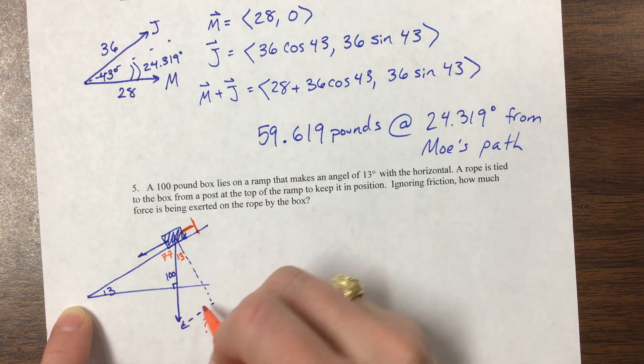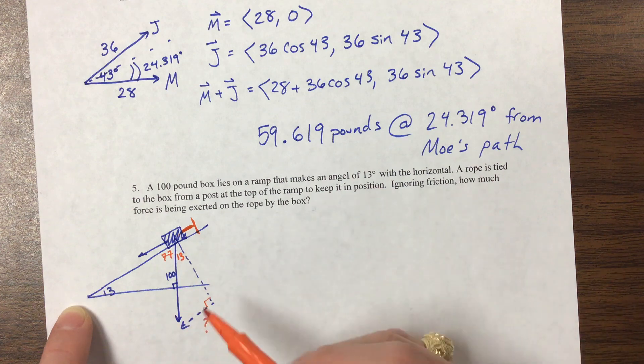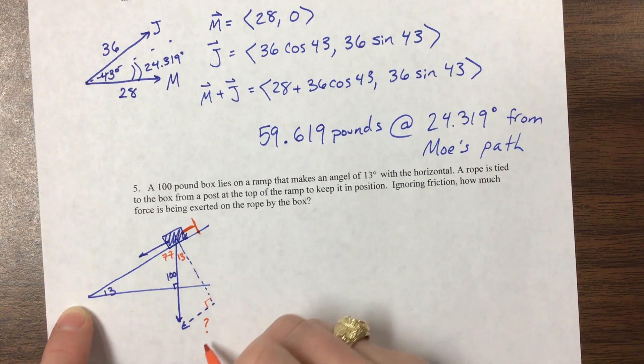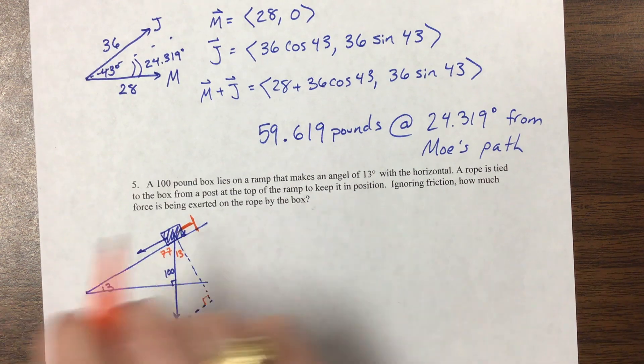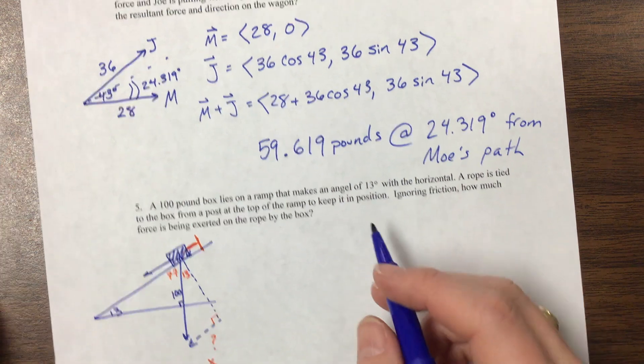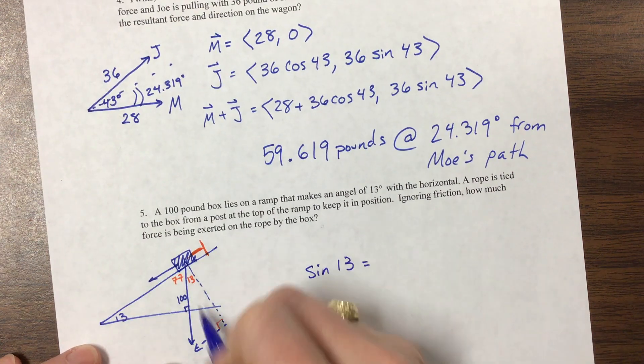Notice we're back in geometry and you've got a little right triangle. We're looking for this, we could call this X, and we've got opposite and hypotenuse. So we can just say that sine of 13 is equal to X over 100.